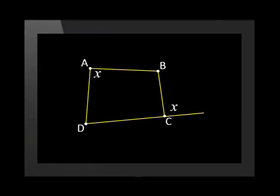If the exterior angle of a quadrilateral is equal to the opposite interior angle of that quadrilateral, then the quad is a cyclic quad.